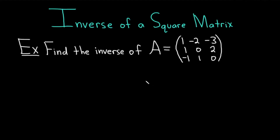Hi everyone, it's the Mathsorcer here with Chegg. In this video, we're going to discuss the inverse of a square matrix. Our example will be to find the inverse of a 3 by 3 matrix. We have the matrix A, whose entries are 1, negative 2, negative 3, 1, 0, 2, and negative 1, 1, and 0. Let's go ahead and carefully find the inverse.